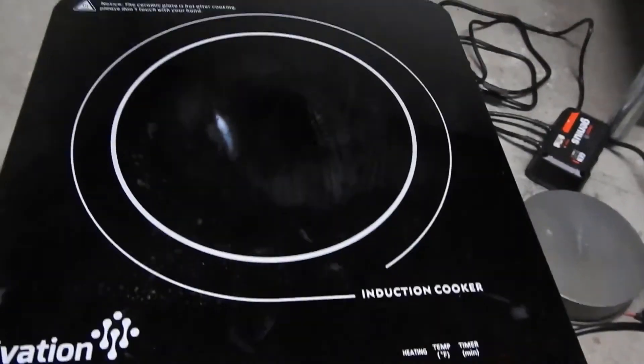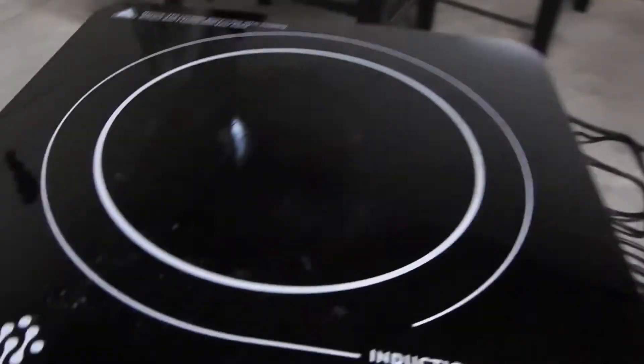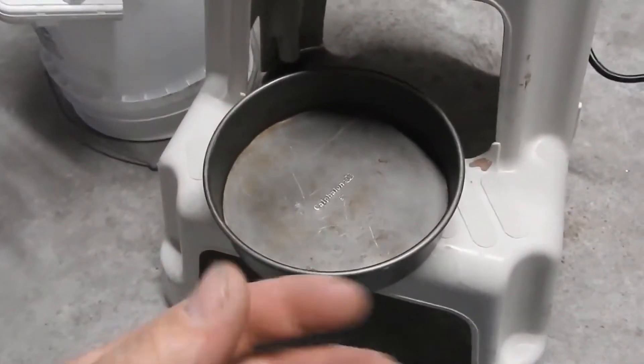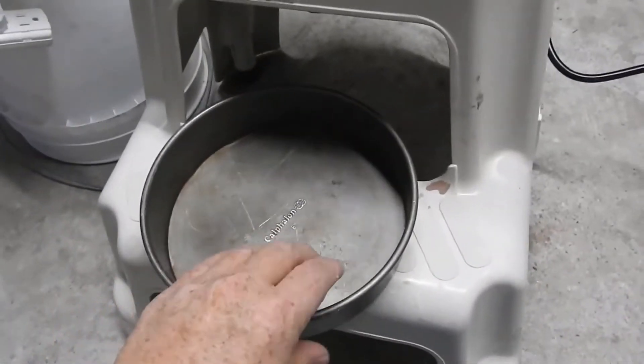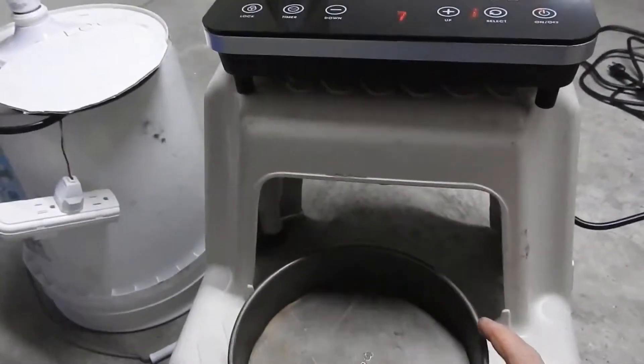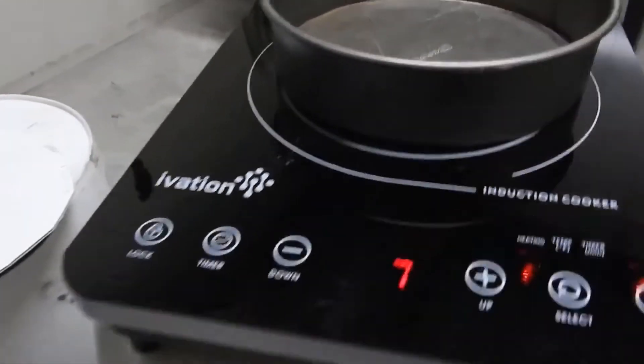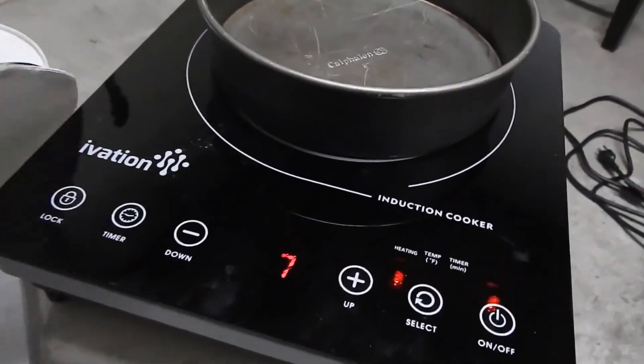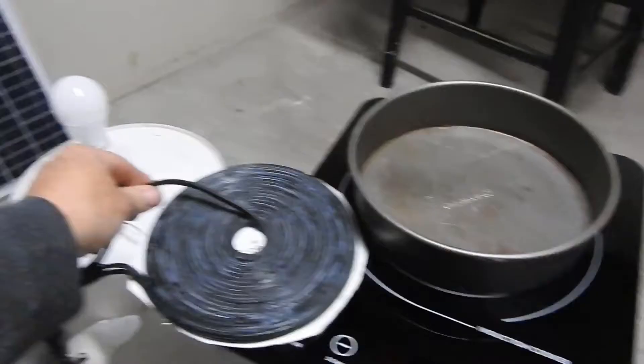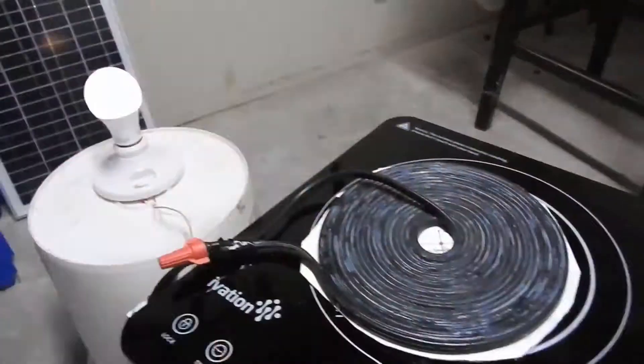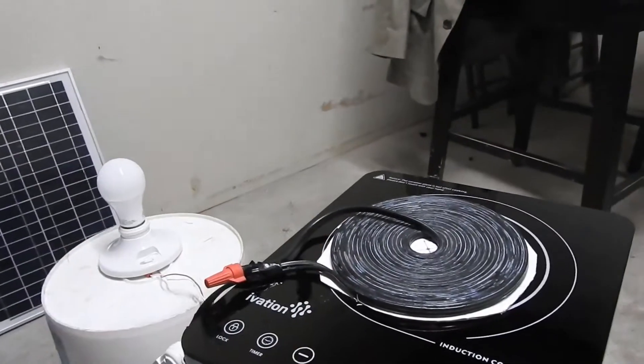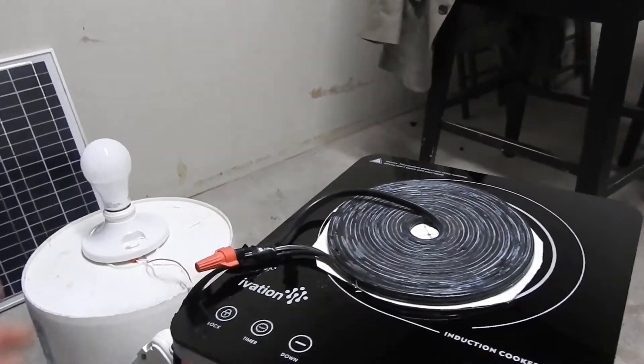Induction stove top on, and a pan, which is getting really hot. Because it's been on there a couple times already. But I'm going to try to... Okay, the induction stove top's on, and I'm going to push this off with the coil, and you'll see the light come on.